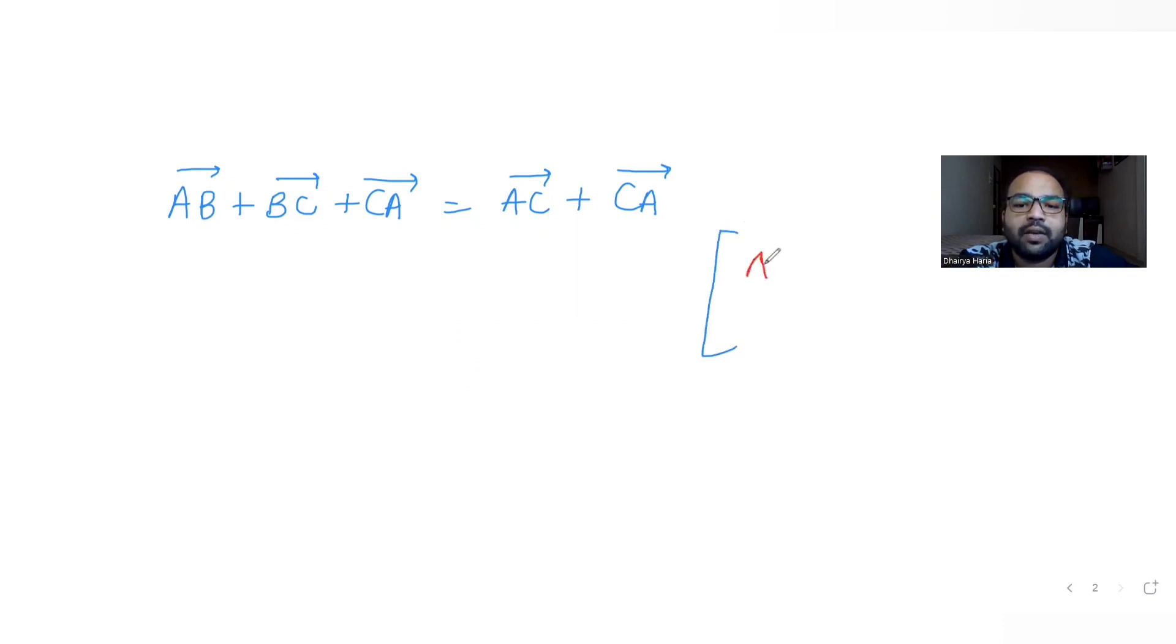Whenever we have a vector of something, let's say vector AB, I can write that as vector of B minus vector of A. So vector of B would be some vector in terms of i cap, j cap, and k cap. Same with A vector, it will also be in some terms of i cap, j cap, and k cap. We can subtract them and get the vector AB bar.